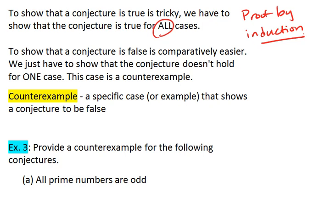So we'll focus on the way to prove conjectures as false, which is comparatively easier. To prove that a conjecture is false, we just have to show that it's not true for one case. And this case that we use is called a counterexample. A counterexample is a specific case or example that shows a conjecture to be false.